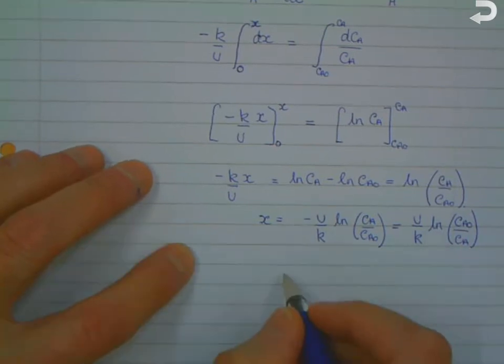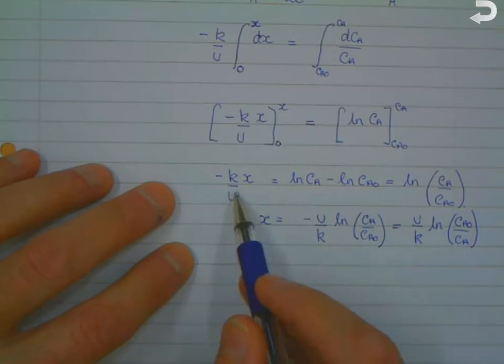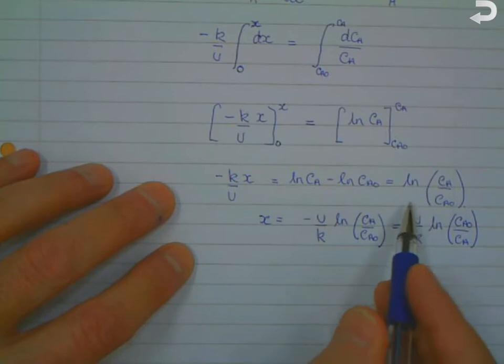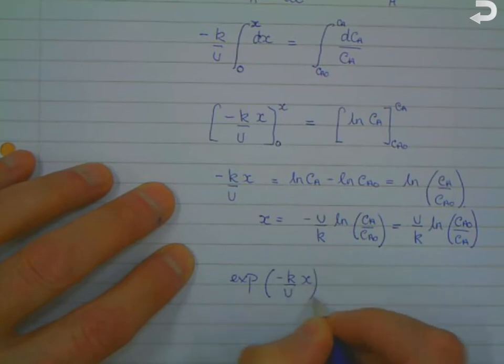If you wanted to do a slightly different calculation, then you can go back up here and take exponentials to get rid of the log term. And you get that the exponential of minus K over U times x...